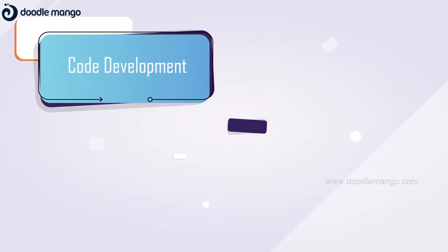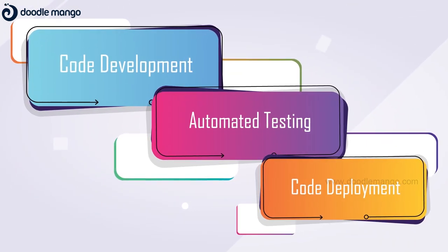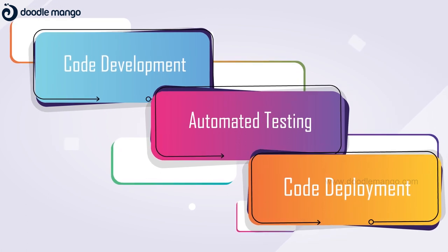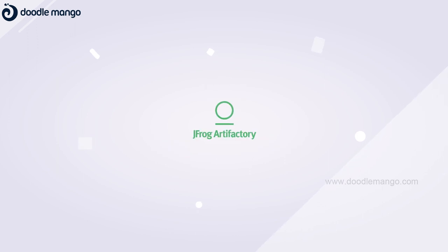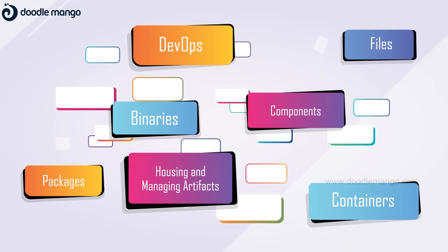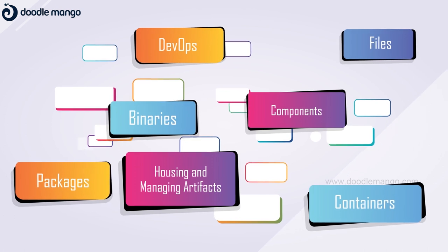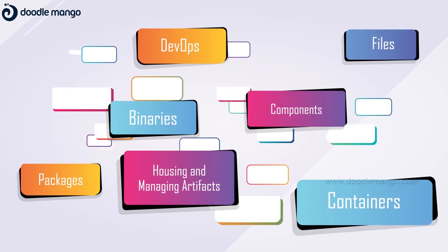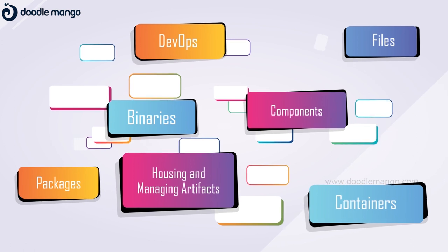Bitbucket provides a centralized platform for collaborative code development, automated testing, and confident code deployment. JFrog Artifactory serves as a central hub for DevOps, housing and managing various artifacts, binaries, packages, files, and containers throughout the software supply chain.